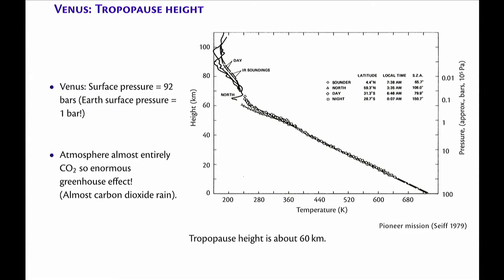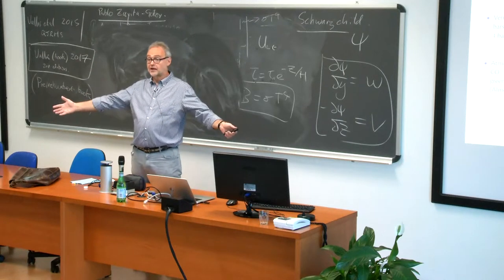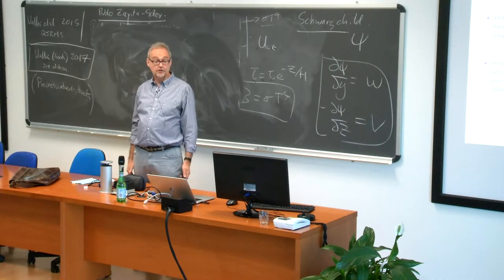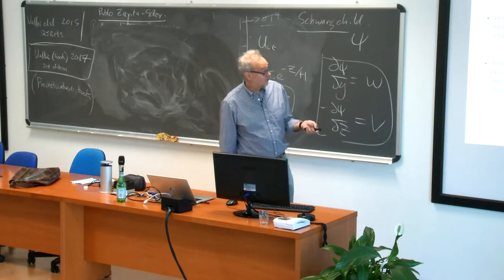Nearly all the planets in the solar system have one form of a tropopause or another. It's a very robust feature of planetary atmospheres. These profiles are from quite different latitudes and locations, yet the temperature is almost the same in all of them. Venus is enormously isothermal until you get to very high latitudes. The reason is because the Hadley cell is so big — it goes to about 60 degrees north and south — and within that Hadley cell, the temperature varies very little indeed.